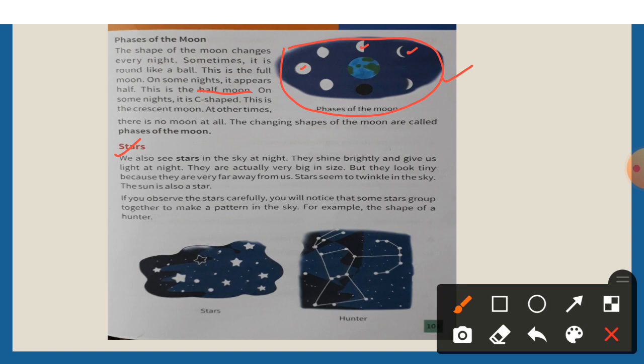They are actually very big in size, but they look tiny because they are very far away from us. The sun is also a star.